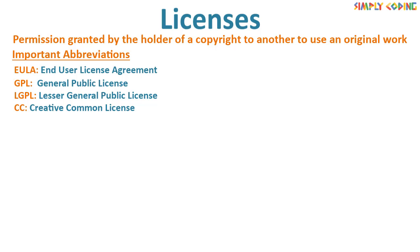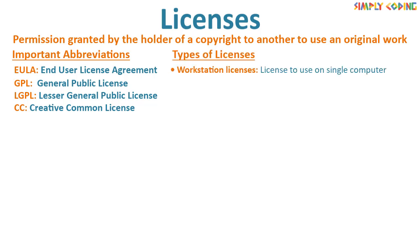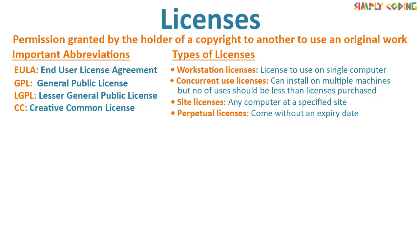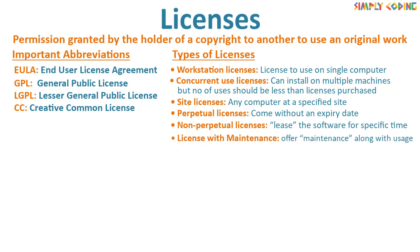CC stands for Creative Commons License. A license, whether proprietary or open source, can be of different types. First is a Workstation license, where the license is given for use on a single computer. Concurrent use licenses allow installation on multiple machines but the number of users must be less than licenses purchased. Site licenses allow installation on any computer at a specified site. Perpetual licenses do not expire, but non-perpetual licenses lease the software for a specific time. Licenses with maintenance offer maintenance along with usage.